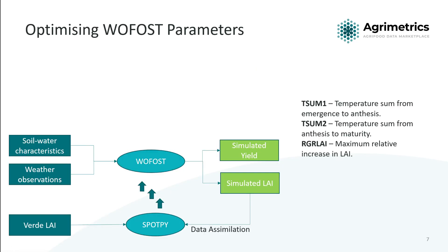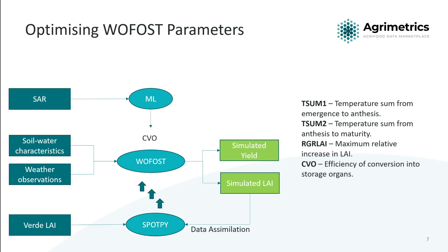We then went a step further — we wanted to optimize a fourth WoFost parameter, CVO, which is the efficiency of converting energy into mass for storage organs. We're using an off-the-shelf machine learning regression approach and SAR data to calculate this CVO parameter, which WoFost will then use as a constant. Due to time constraints we can't go into detail on how this was done, but it's an extra parameter that WoFost can use to improve results.